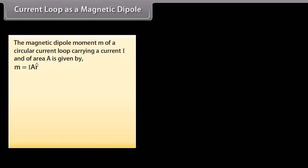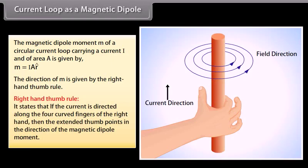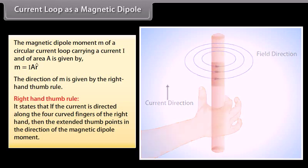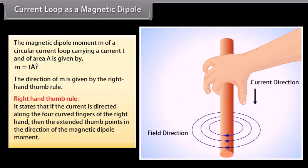The magnetic dipole moment M of a circular current loop carrying current I and of area A is given by M equals I times A, R-cap. The direction of M is given by the right-hand thumb rule: if the current is directed along the four curved fingers of the right hand, then the extended thumb points in the direction of the magnetic dipole moment.